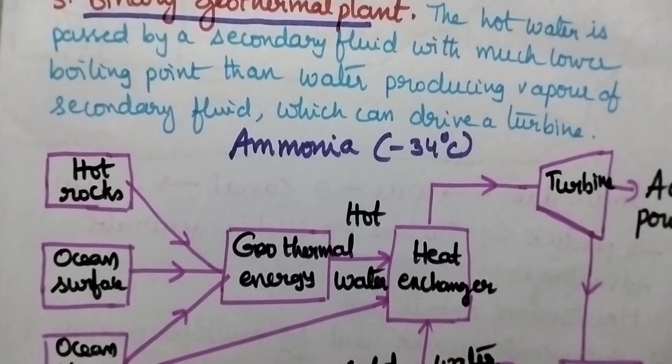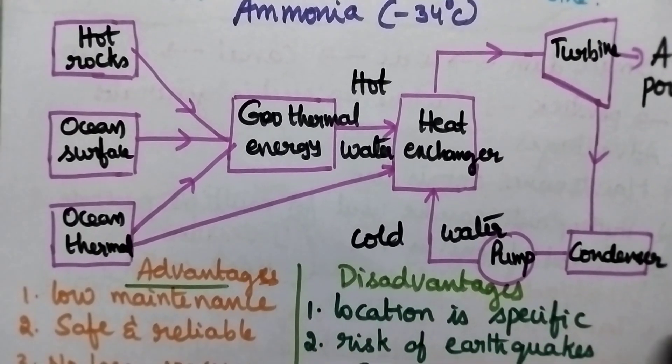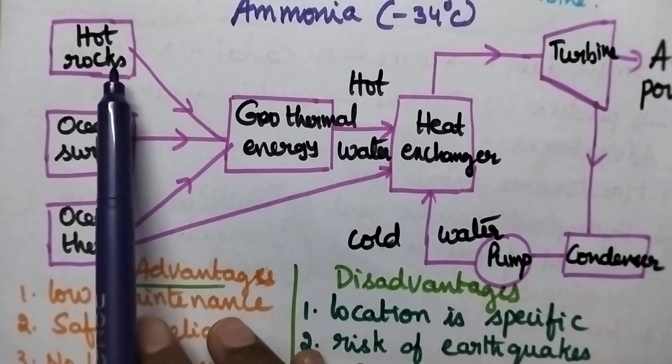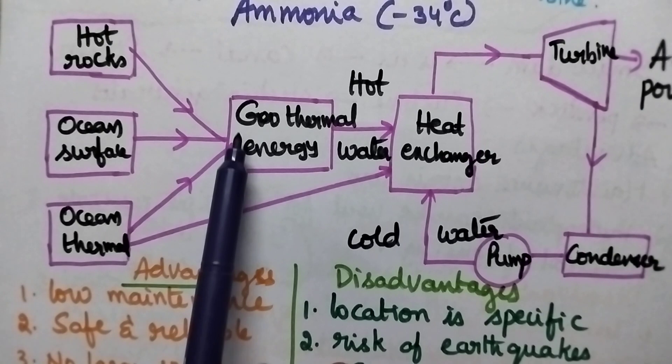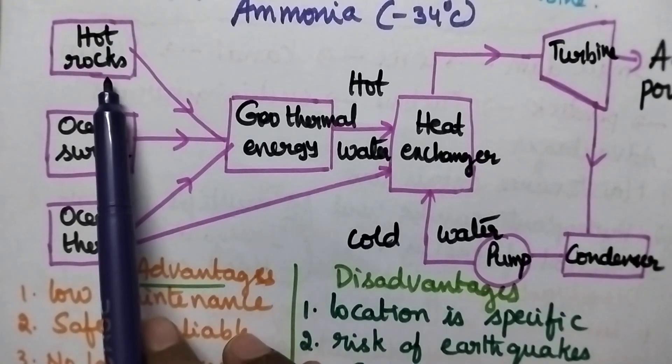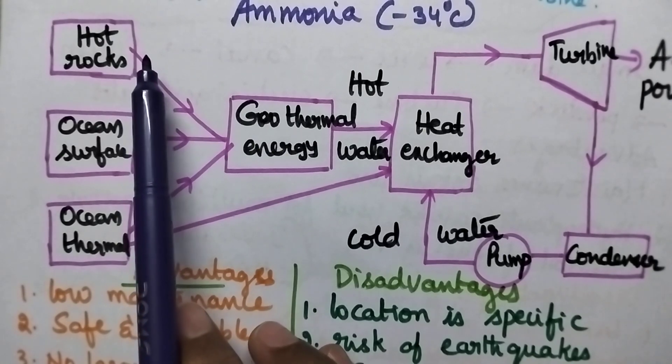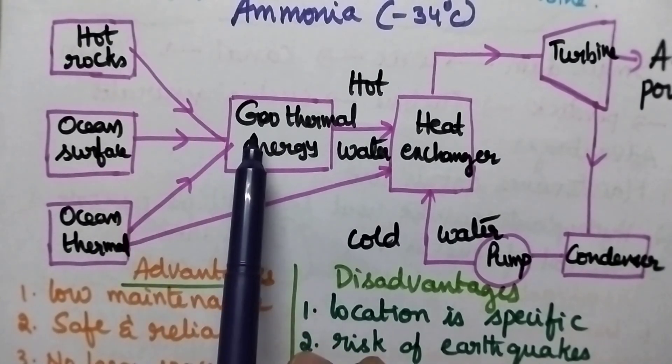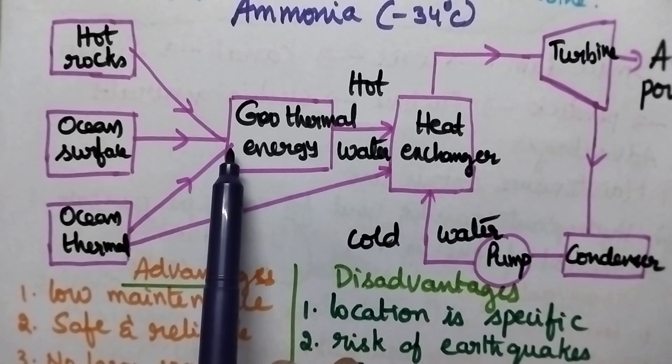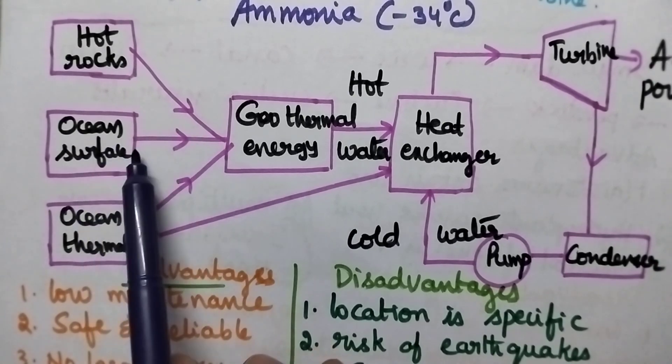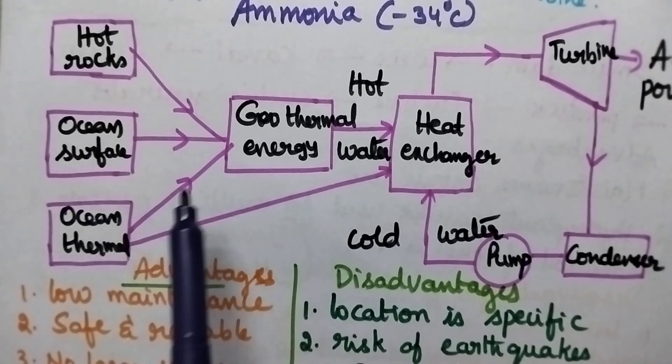Let's see the design of a binary geothermal plant. Geothermal energy can be harnessed from hot rocks inside the earth due to radioactive substances, or from ocean surface water, or from ocean thermal energy.